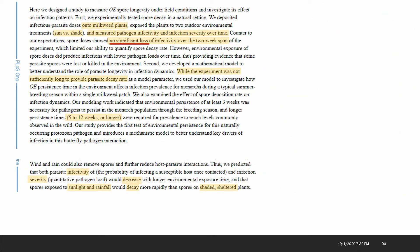For this experiment they deposited infectious amounts on milkweed plants and exposed those plants to environmental treatments: sun versus shade. Then they measured how the spores would infect caterpillars over time. But counter to their expectations, the spores showed no significant loss of infectivity over a two week span. So in two weeks they really didn't degrade in any way shape or form. From that data you couldn't really quantify how quickly this spore would decay when it's subject to environmental weathering. The experiment was not sufficiently long to provide some of the parameters for the model, but they still went ahead and built the model.